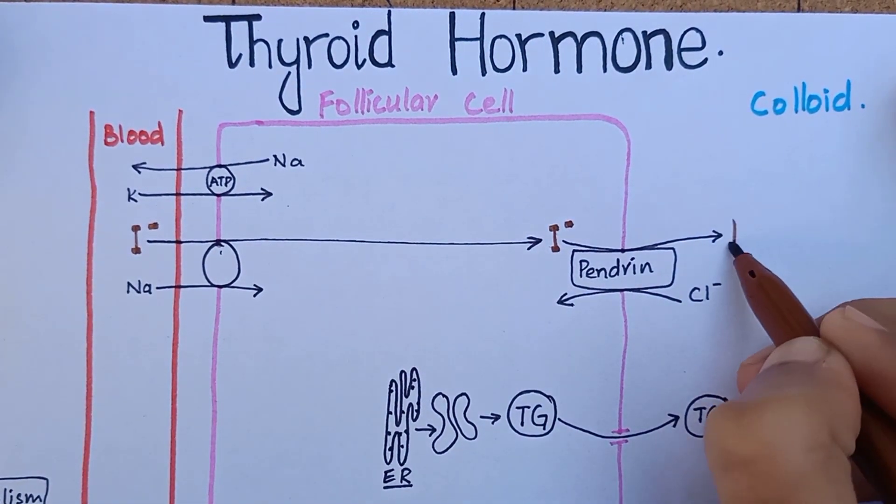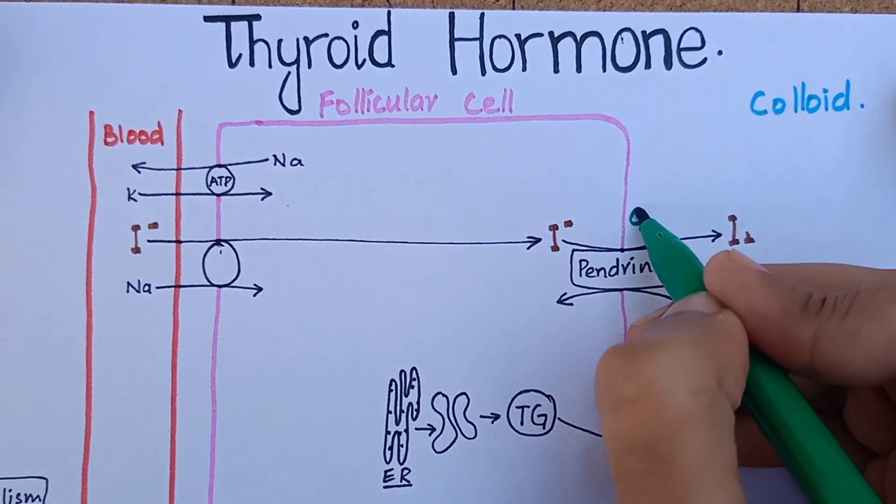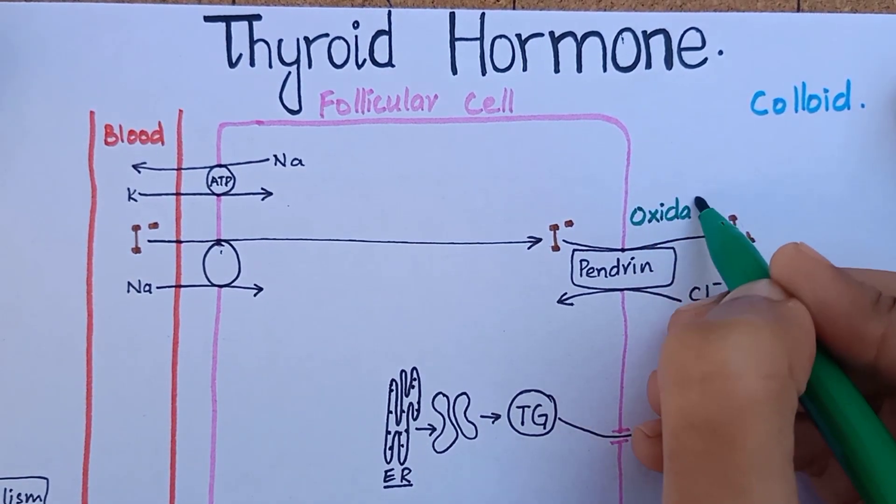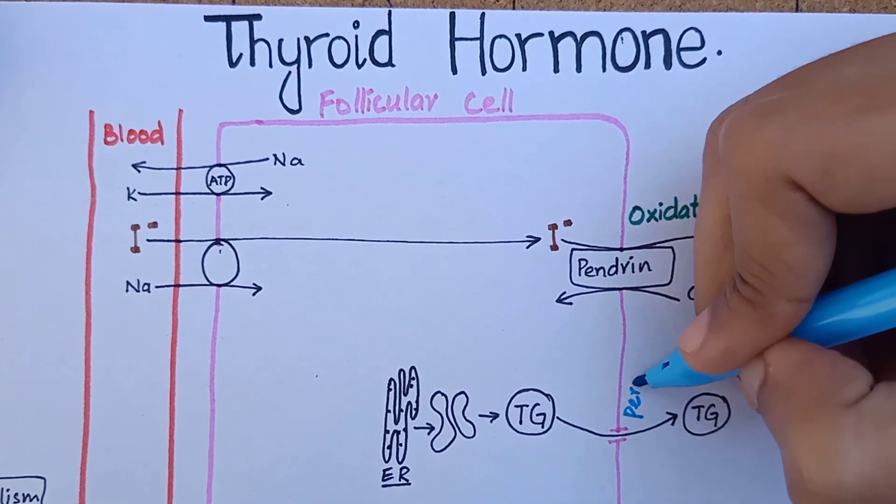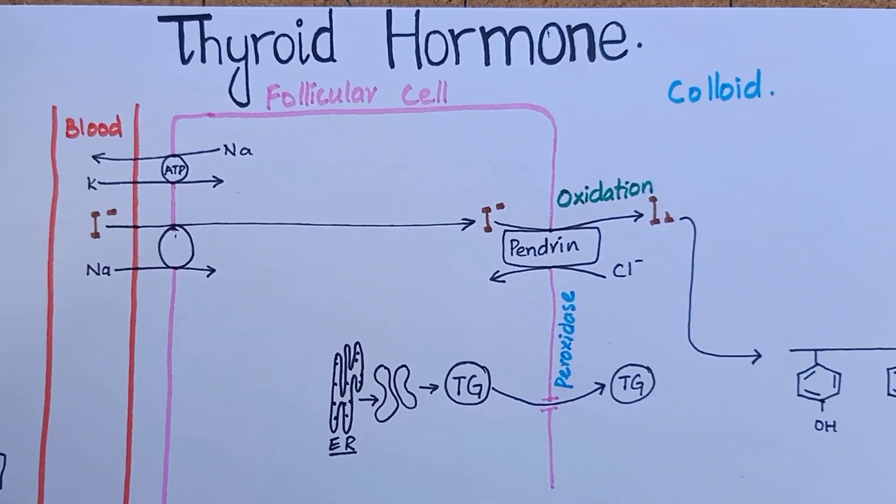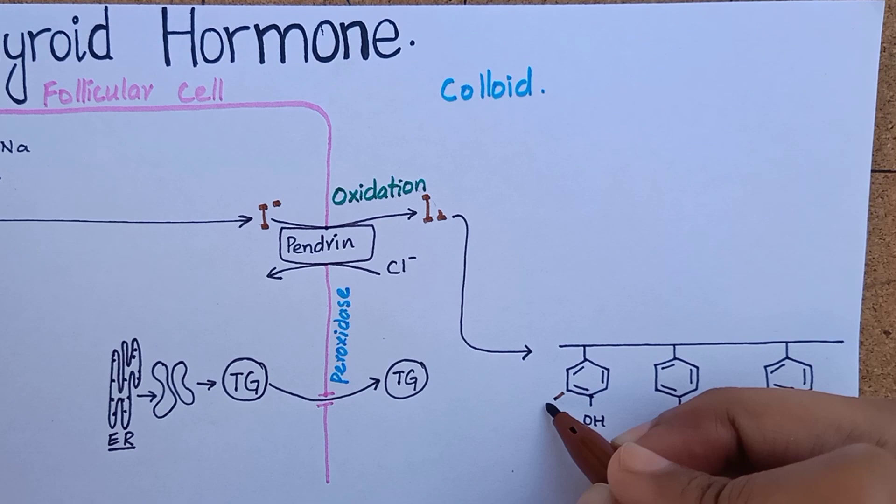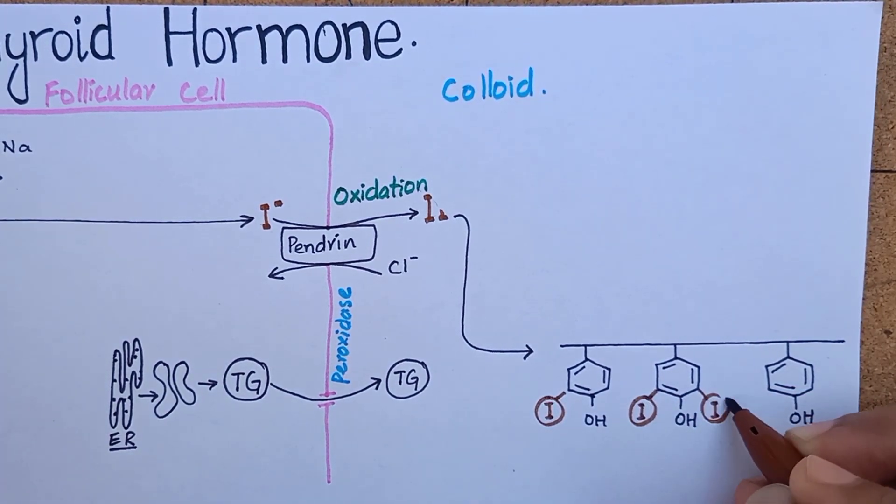The first essential step in the formation of thyroid hormones is the oxidation of iodide to iodine molecule. This oxidation process is promoted by an enzyme peroxidase that is located on the apical membrane of follicular cells. The oxidized iodine now binds to the tyrosine rings of thyroglobulin molecule that are already present in the colloid.